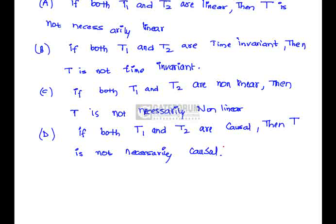It's not true because if both are time invariant, then the cascaded system is also time invariant. Whereas Statement C: If both T1 and T2 are non-linear, then T is not necessarily non-linear. If both T1 and T2 are non-linear,